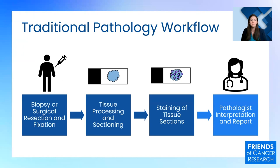Traditionally, most pathology workflows look similar to this simplification. After a patient undergoes biopsy or surgical resection of their tumor, the tissue and cells are fixed, processed, sectioned, and stained, such that they can be read on a slide by a pathologist for examination under a microscope to determine a patient's cancer diagnosis, type, stage, or the presence of certain biomarkers that may be targetable by targeted therapy.